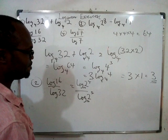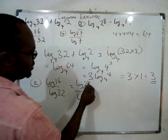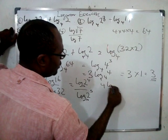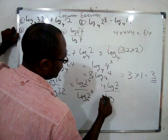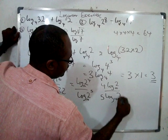So you take this one back, you have 4log₁₀2 all over 5log₁₀2.